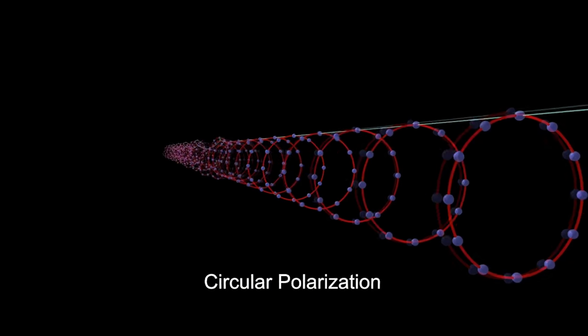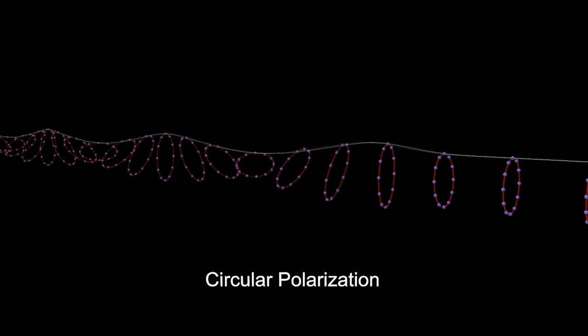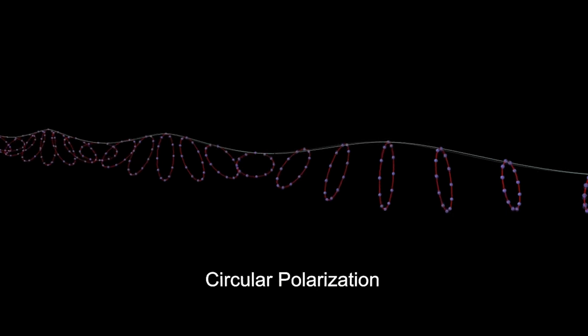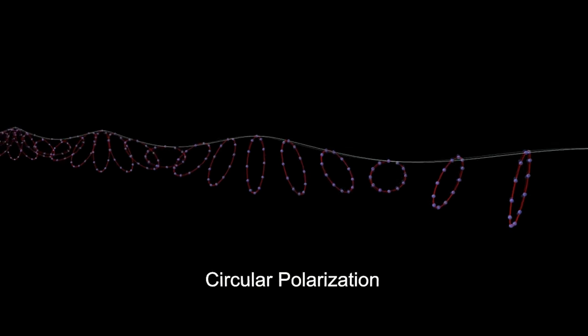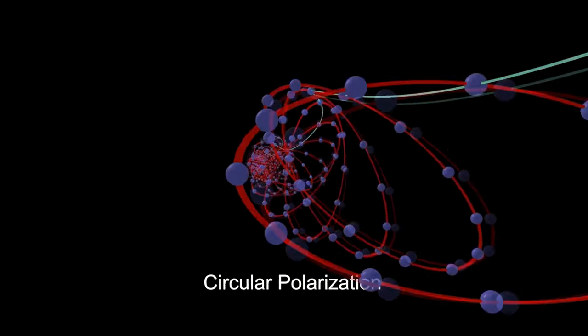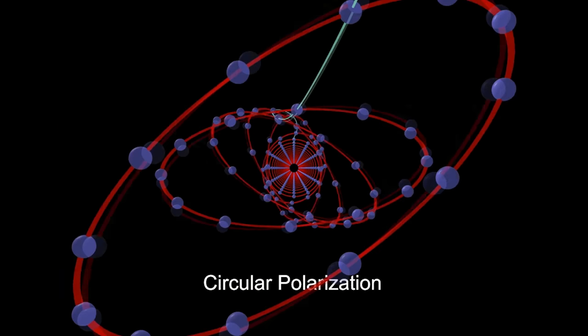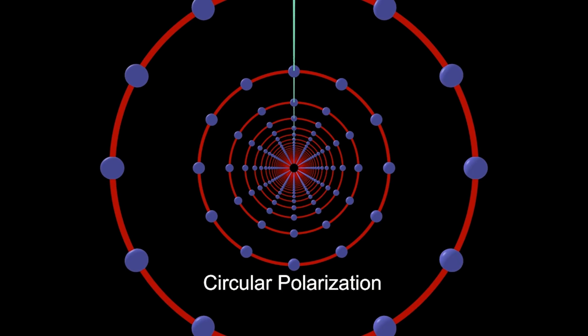Now knowing the polarization of the gravitational wave also tells us the orientation of the two black holes as they're spinning around each other, so we can actually figure out the angles and the velocities as they're coming together, which is ridiculous. We haven't been able to do that before with the previous gravitational wave detections.